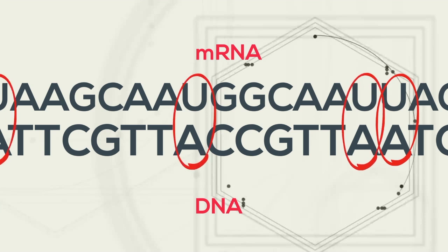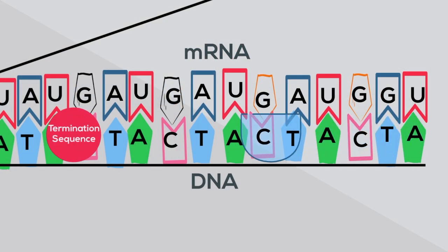When the RNA polymerase reaches a stop code, it detaches from the DNA and the mRNA is complete. This step is called termination.